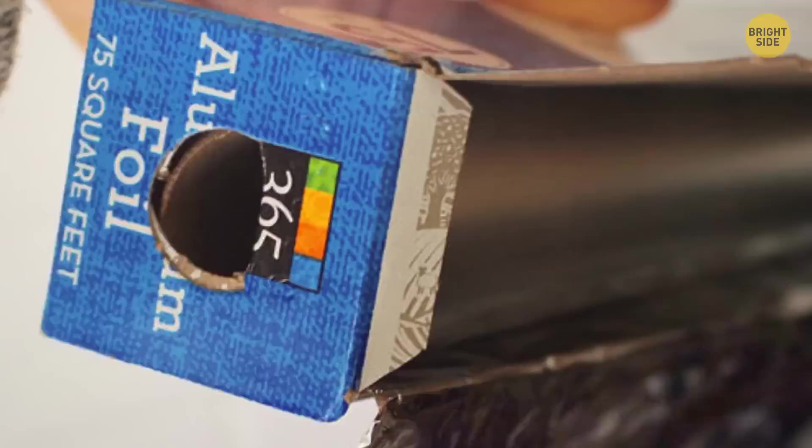If you take a box of aluminum foil, you'll see tabs you can press on the side. They keep the foil straight and prevent it from rolling. It's also easier to tear off some amount of foil thanks to those tabs.